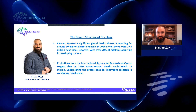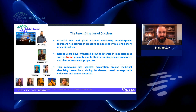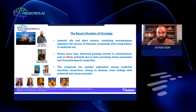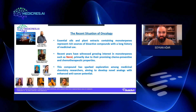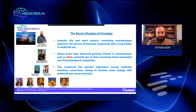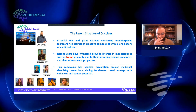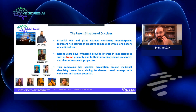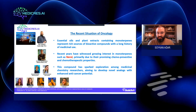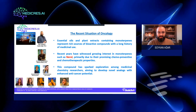In silico studies come into play in this area due to this reason. Essential oils and plant extracts containing monoterpenes represent rich sources of bioactive compounds with a long history of medicinal use. Recent years have witnessed growing interest in monoterpenes such as Nerol, primarily due to their promising chemo-preventive and chemotherapeutic properties. This compound has sparked exploration among medicinal chemistry researchers aiming to develop novel analogues with enhanced anti-cancer and anti-neoplastic potentials.